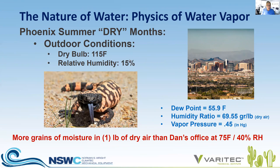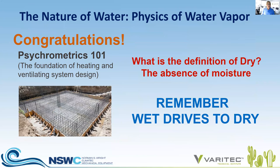This is a concept you need to be aware of: our dry time of the year is not June and July when it's 115 degrees. Our dry time is when we're in our winter months, and that's what we need to be really concerned about. So congratulations — you've just graduated from psychrometrics 101, the foundation of all heating and ventilating systems. Two key points: the definition of dryness is the absence of moisture, and wet drives to dry. Moisture moves to drier environments because of the force of vapor pressure.